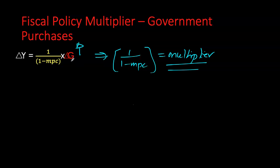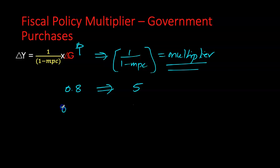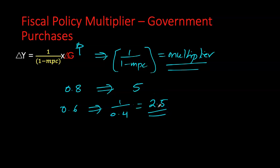This multiplier gives the amplified effect on the overall economy when government increases or decreases fiscal spending. With MPC = 0.8, the multiplier is 5. Notice: the higher the MPC, the higher the multiplier; the lower the MPC, the lower the multiplier. For example, an MPC of 0.6 gives a multiplier of 2.5 — for every dollar increase in government spending, real GDP only increases by 2.5 dollars.